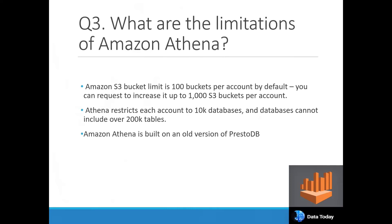The next question is: what are the limitations or drawbacks of Athena? First, S3 is limited to 100 buckets per account by default, but you can request an increase to 1,000 S3 buckets per account through the AWS support team. Regarding Athena itself, each account is restricted to 10 key databases, and databases cannot include over 200 tables — though this limit has been increased from earlier lower values.